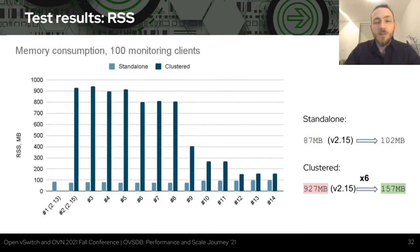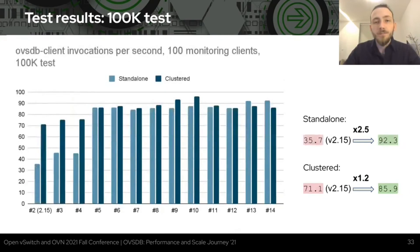Here is a combined performance chart for every version tested. Performance of a standalone database increased 3 times from OVS 2.13 to 2.15, and 15 times for a clustered database — going from 13.7 to 207 OVSDB client invocations per second. Memory consumption for standalone didn't change much, only a slight increase due to data structure changes, but for clustered databases memory usage was reduced 6 times. The 100k test results also show strong improvements: up to 2.5 times for standalone and about 20% for the clustered case.